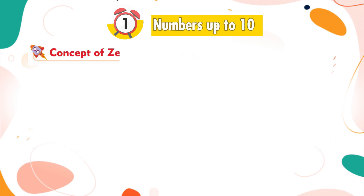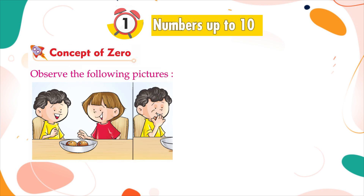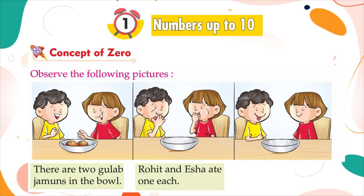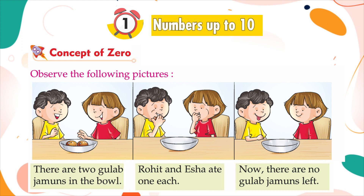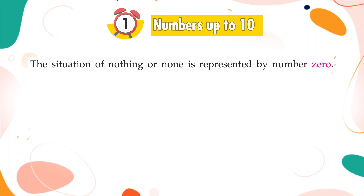Concept of zero. Observe the following pictures. There are two gulab jamuns in the bowl. Rohit and Isha ate one each. Now there are no gulab jamuns left. The situation of nothing or none is represented by the number zero. Zero is written as 0.